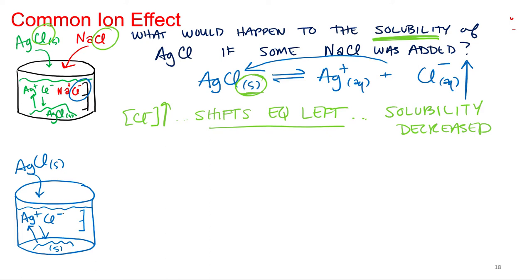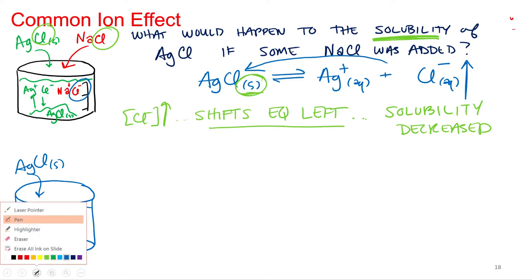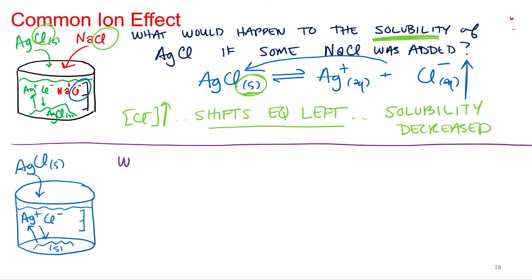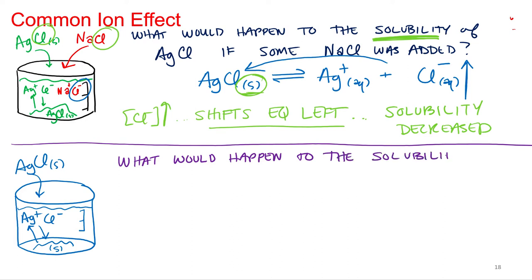So we've got silver chloride still in our equilibrium. The question here would be: what would happen to the solubility of silver chloride if sodium hydroxide was added?